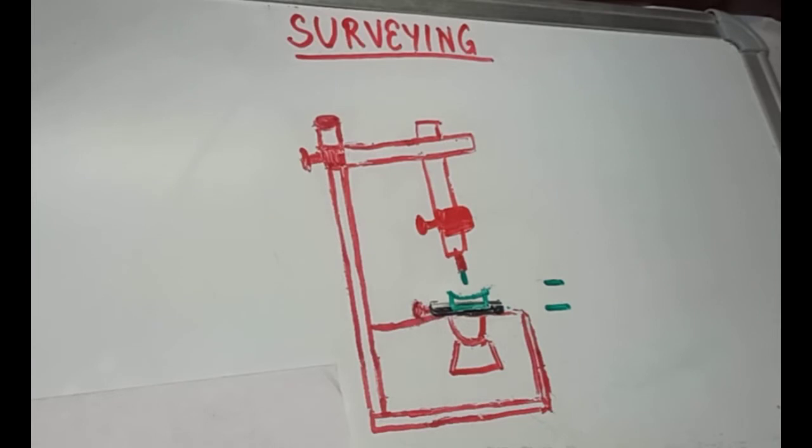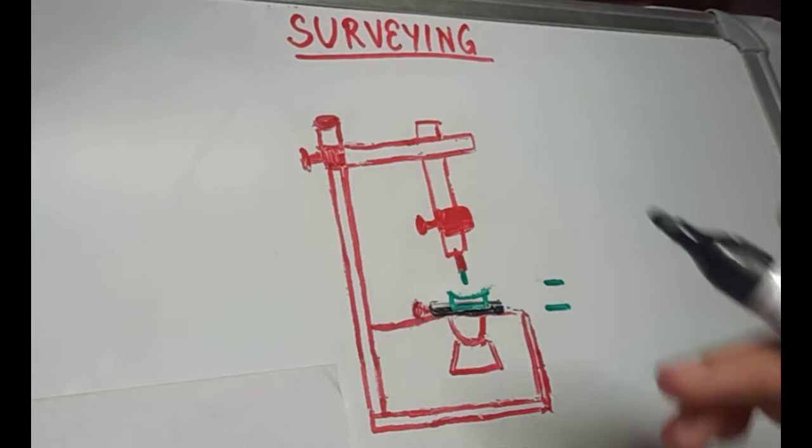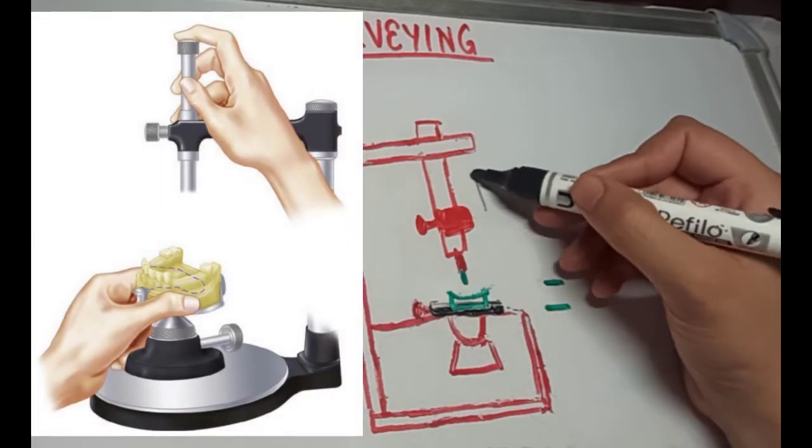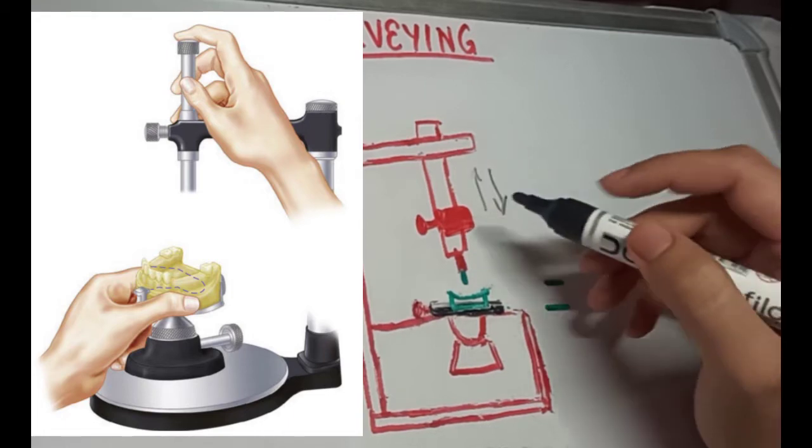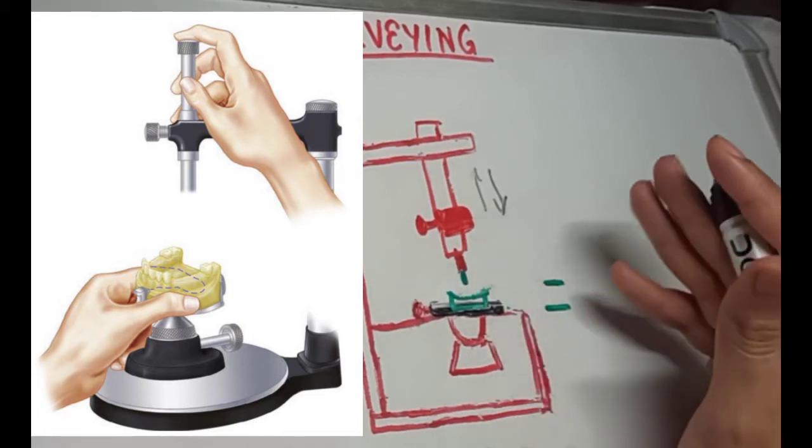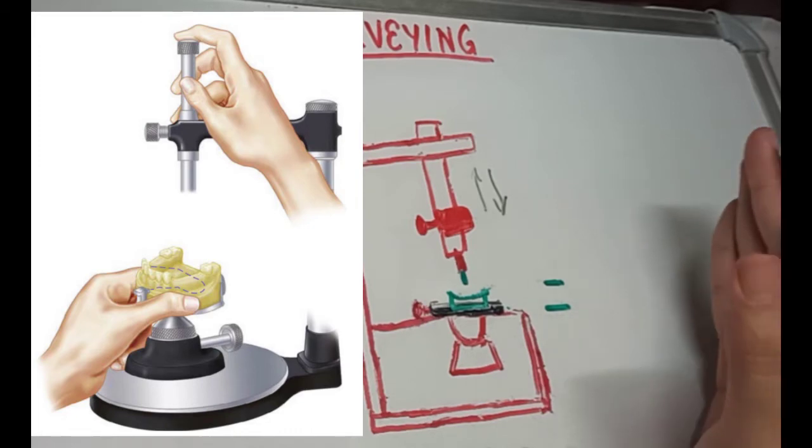To survey the cast, we start with our first surveying tool that is our analyzing rod and the surveying arm is allowed to move up and down contacting the cast. The analyzing rod analyzes all the areas of undercuts or height of contour of the cast.